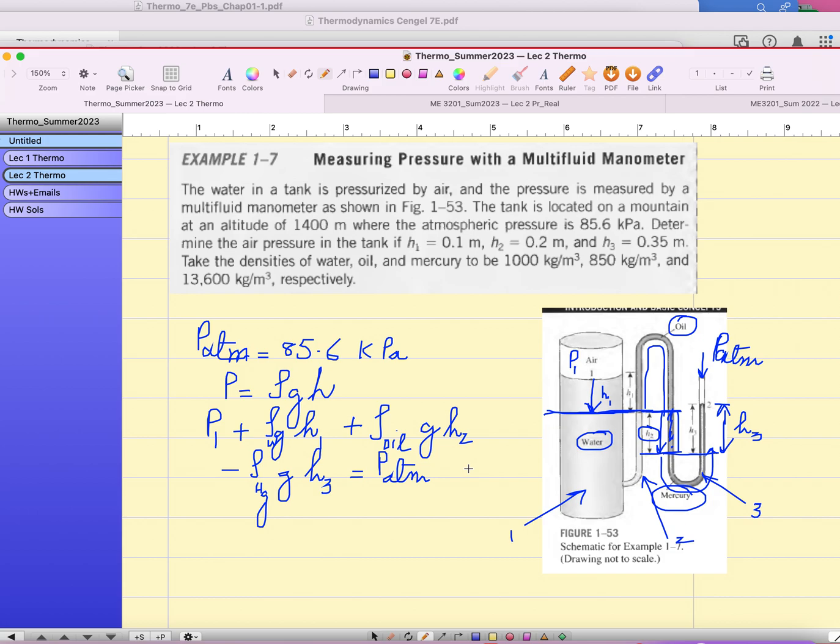So this is how you would calculate. Now you will plug in everything. So let's find out the pressure. The atmospheric pressure is given 85.6 kPa. h1 is given, h2 is given, h3 is given. Take the densities: density of water which is 1000, oil which is 850, mercury which is 13,600 kg/m³.